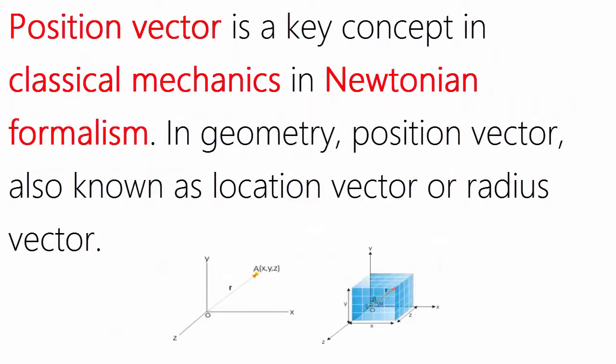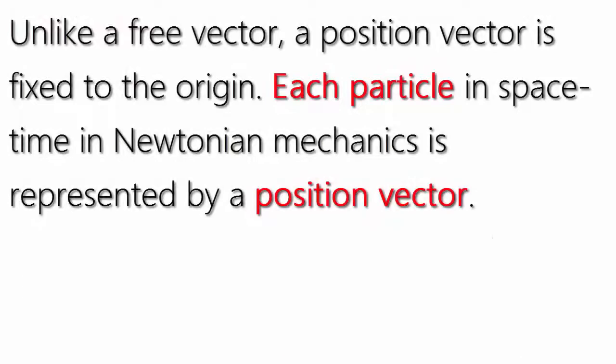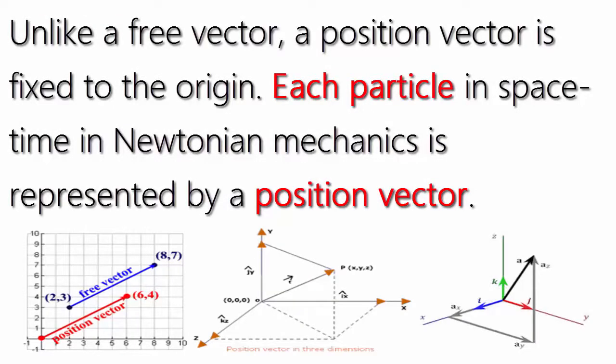Position vector is a key concept in classical mechanics in Newtonian formalism. In geometry, position vector — also known as location vector or radius vector — unlike a free vector, is fixed to the origin.